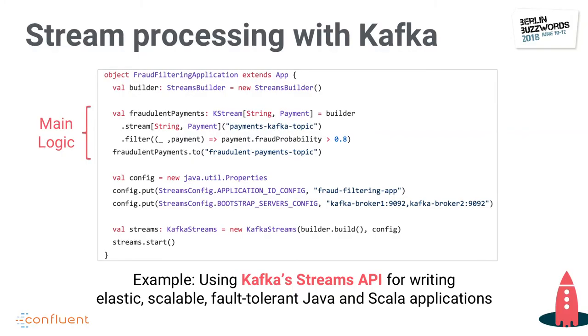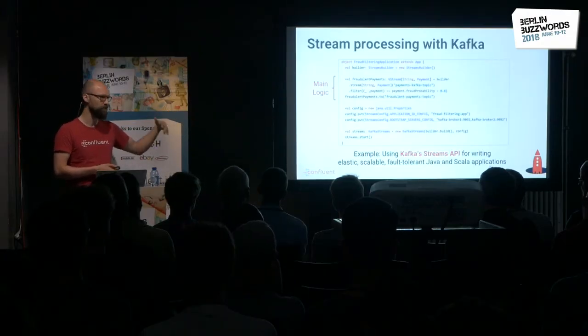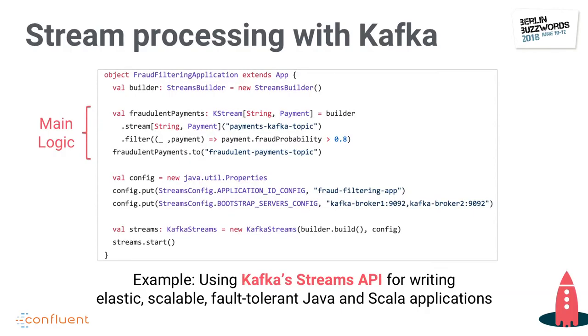Before KSQL, the way you would process data in Kafka through Kafka Streams looked something like this — here is an end-to-end Kafka Streams application that reads from Kafka, applies simple fraud detection logic on the input data in real time, and writes the results back to Kafka. Apart from import statements, this is literally the application you'd have to write. It could run on a single machine or dozens of containers. Even so, a lot of people said this is still quite a high barrier, either because they're not Java or Scala experts, or because implementing and deploying those applications takes too long.